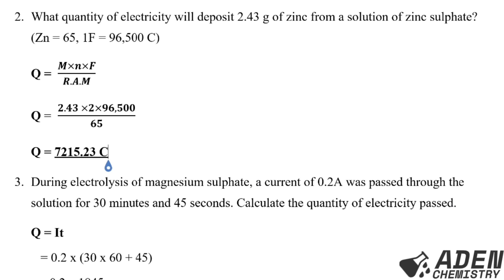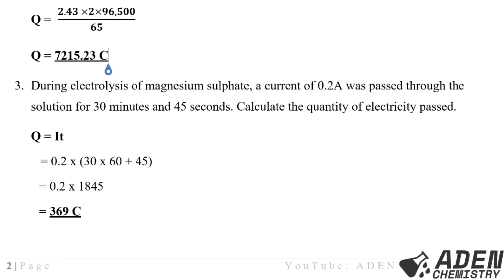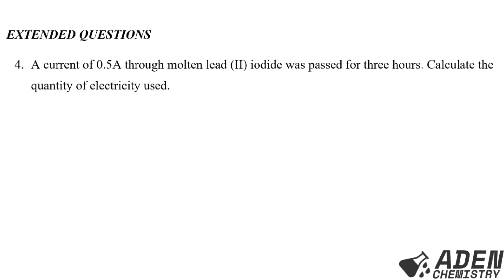Example 3: During the electrolysis of magnesium sulfate, a current of 0.2 amperes was passed through the solution for 30 minutes and 45 seconds. Calculate the quantity of electricity. Using Q = IT: I = 0.2 A, T = (30 × 60) + 45 = 1,845 seconds. So Q = 0.2 × 1,845 = 369 Coulombs.